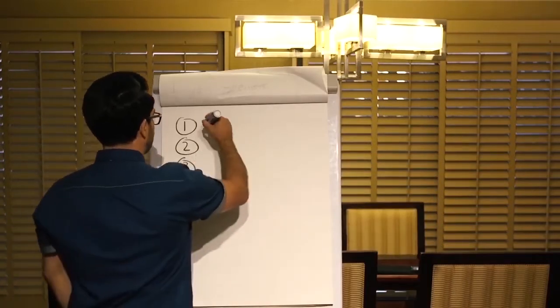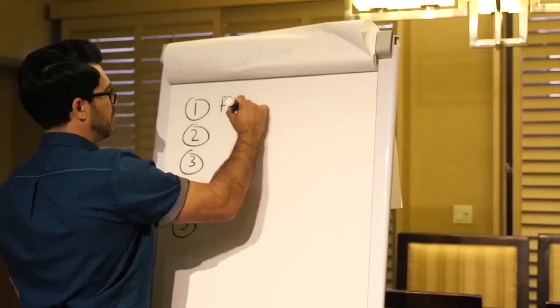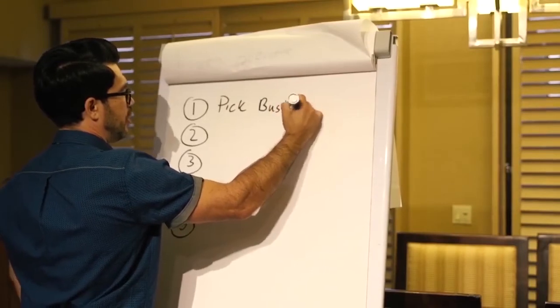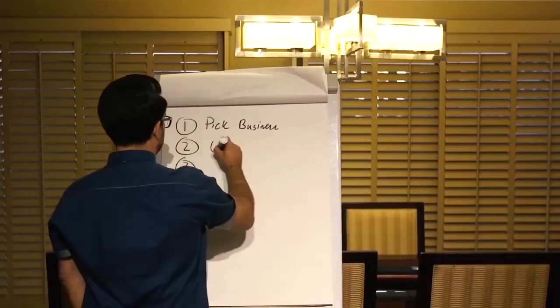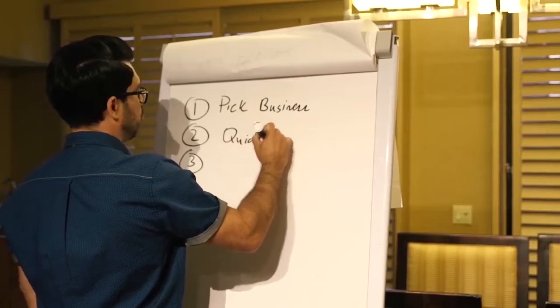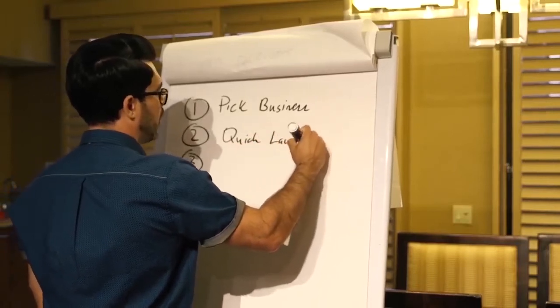There's five steps. First thing I'm going to do is show you how to pick what business because you got to know how to pick the right business. Number two, I want you to launch it. I'm going to show you what I call the quick launch formula.